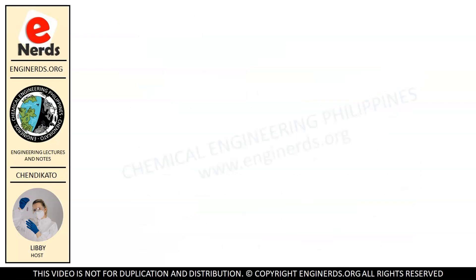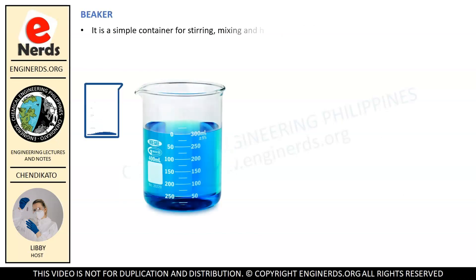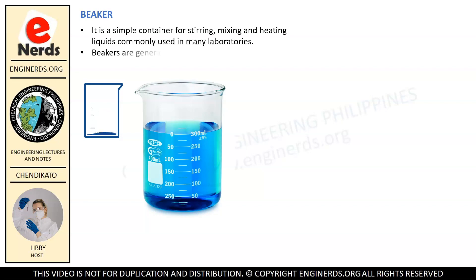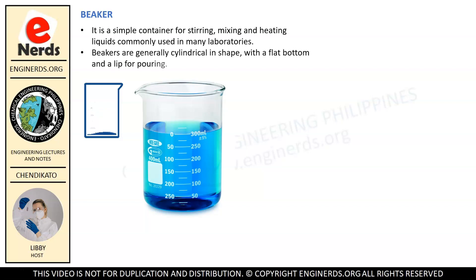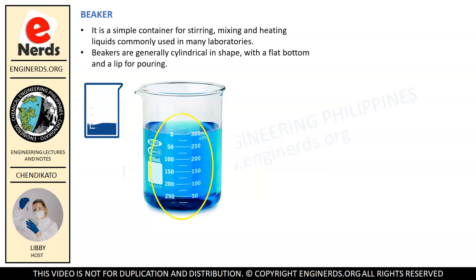The first in our list is what we call a beaker. A beaker is a simple container for stirring, mixing and heating liquids, commonly used in many laboratories. Beakers are generally cylindrical in shape, with a flat bottom and a lip for pouring. You can see here the horizontal lines to represent units of measurement to measure the volume of liquids.